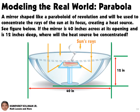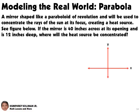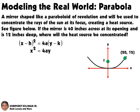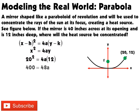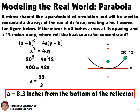Let's now discuss a real world problem involving a parabola. A mirror shaped like a paraboloid of revolution will be used to concentrate the rays of the sun at its focus, creating a heat source — see figure below. If the mirror is 40 inches across at its opening and is 12 inches deep, where will the heat source be concentrated? If we lay this out using the x and y axes, we will have a point at (20, 12) and we need to look for the focus. We need to use the standard form of equation for a parabola that opens upward. Since the vertex is at the origin, h and k will be 0. We will substitute the coordinates (20, 12) — 20 for x and 12 for y — and then solve for a. This will give us the location of the focus from the vertex, or the base of the reflector. The heat is concentrated 8.3 inches from the base of the reflector.